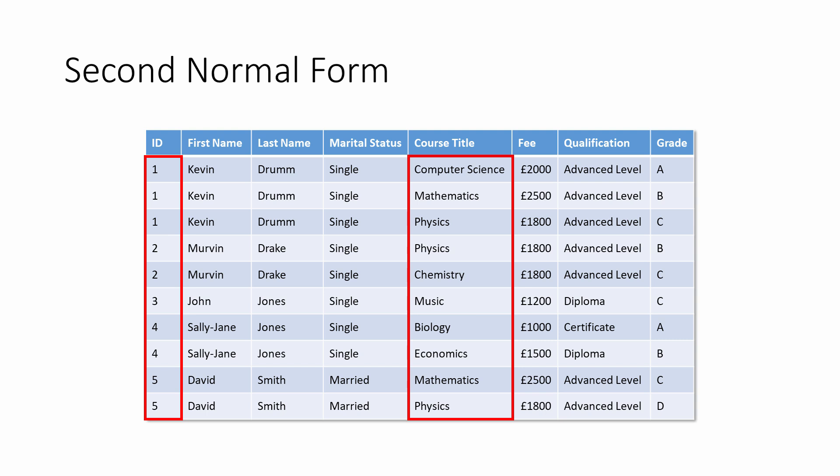Together, these two fields serve as a composite primary key. The primary key for each record in this table contains a piece of information about a student and a piece of information about a course — it tells you which students are doing which courses, and you need to retain this information.